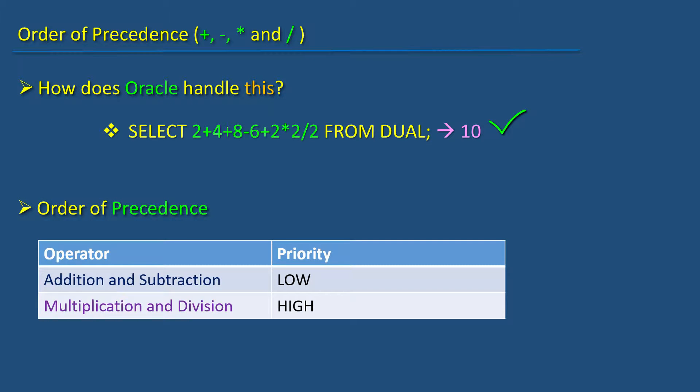What if I have a statement like this? How does Oracle handle it? Select 2 plus 4 plus 8 minus 6 plus 2 times 2 divided by 2 from dual.